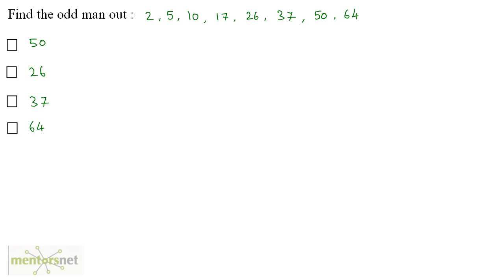So what's the odd man out in this series? At first, this question is very tricky. Let us subtract 1 from each of this number or let us rewrite each of this number. I can write 2 as 1 plus 1. 5 can be written as 4 plus 1. 10 can be written as 9 plus 1. 17 is 16 plus 1. 26 is 25 plus 1. I have 37 which is 36 plus 1. 50 is 49 plus 1 and 64 is 63 plus 1.